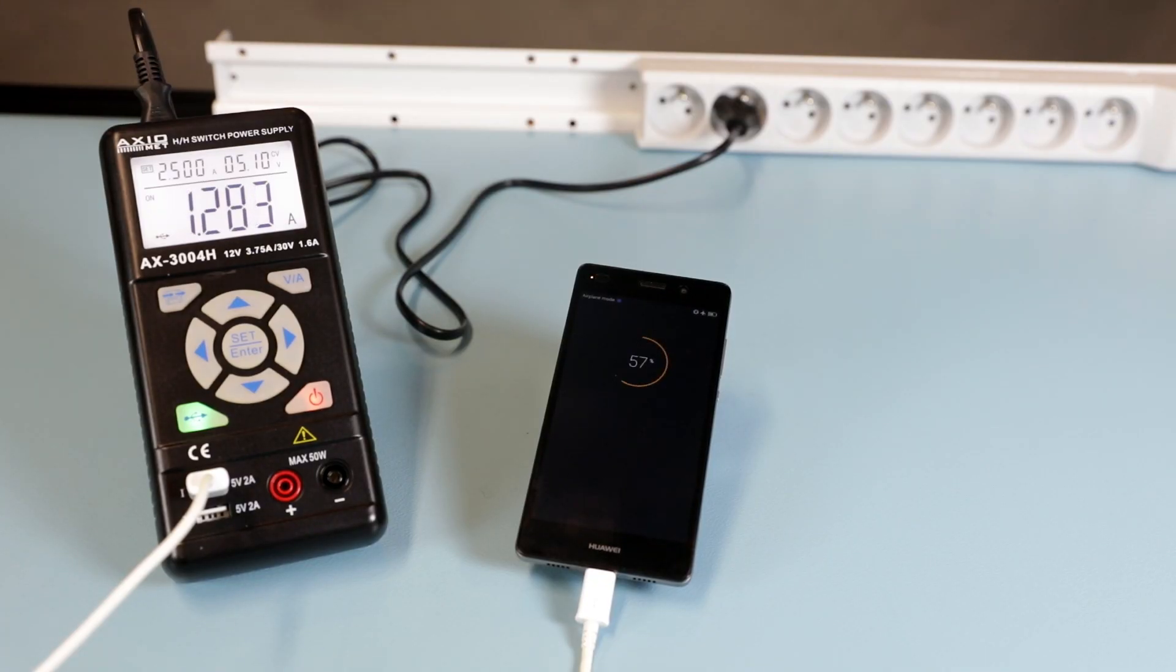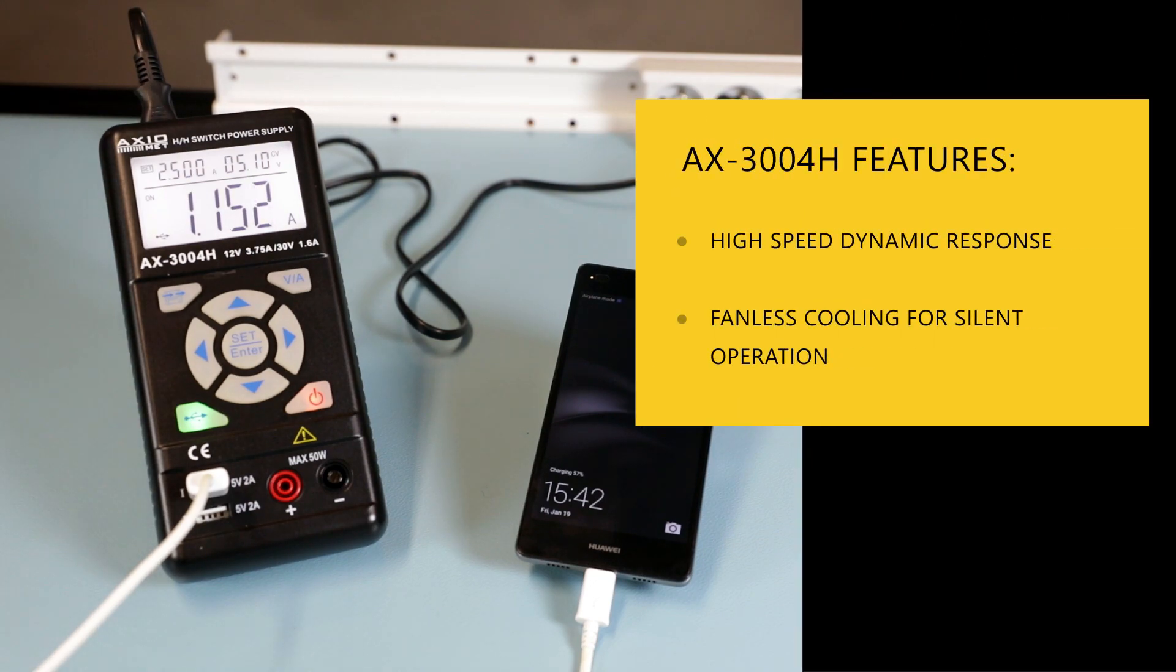It may also be used as a voltage source to check and adjust industrial automation systems. The calibrated current measurement at the USB outlets allows you to precisely determine power consumed by the receivers powered by the USB port.